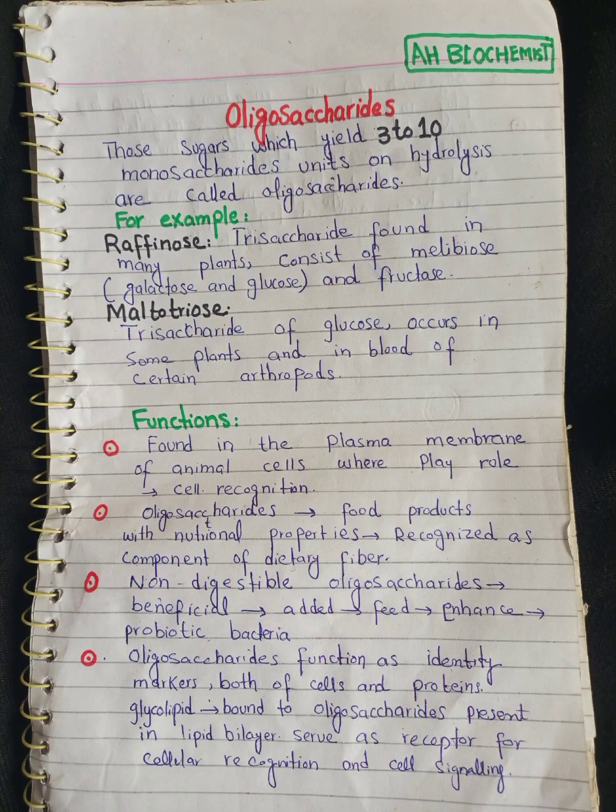Oligosaccharides are sugar molecules which yield 3 to 10 monosaccharide units on hydrolysis. There are many examples of oligosaccharides; two of them are raffinose and maltotriose. Raffinose is a trisaccharide found in many plants.